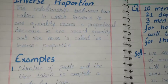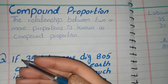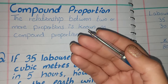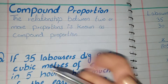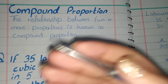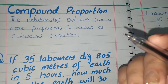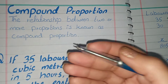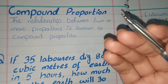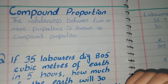Now we have compound proportion. In simple proportion there were two ratios. In compound proportion we have two or more than two proportions combined, which we call compound proportion.